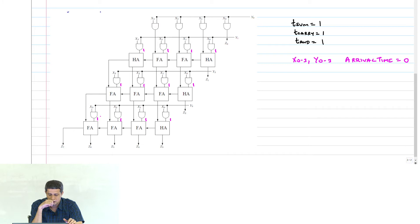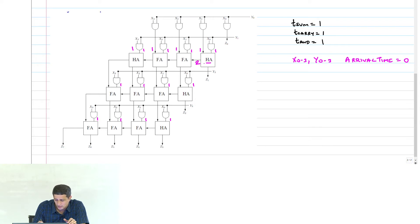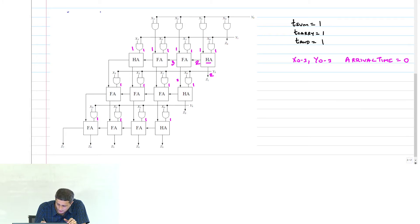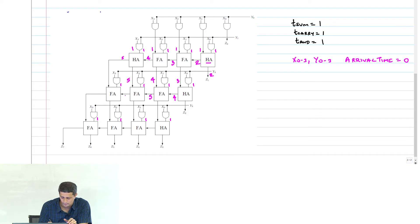These AND gates are also the same. Now for the first half adder, what is the arrival time for carry out? It is going to be 1 plus 1, which will be 2. Next full adder: 3, then 3, then 4, then 4, then 5, 5. Next stage: 4, 5, 6, 7.